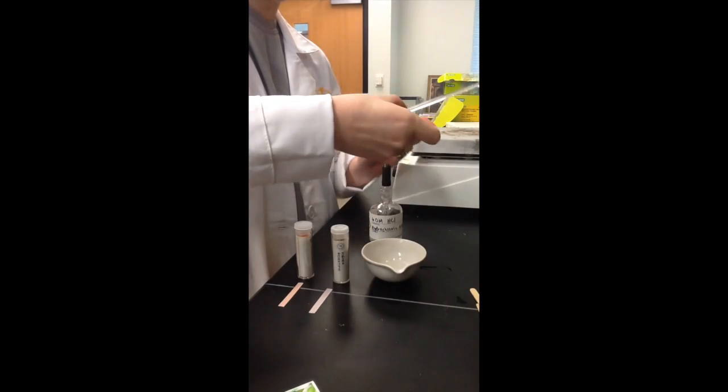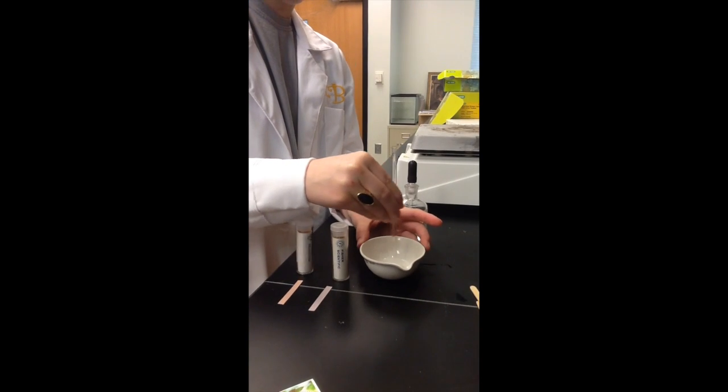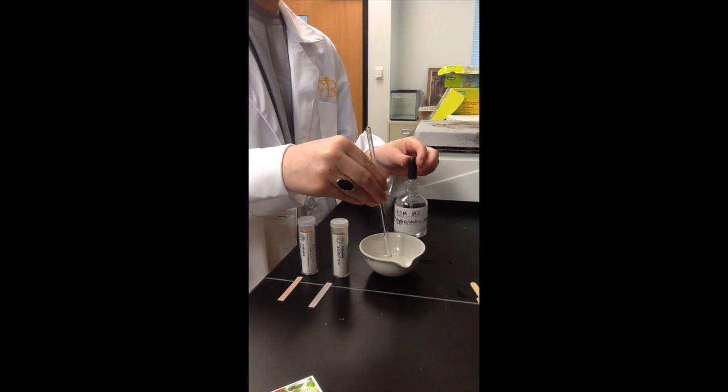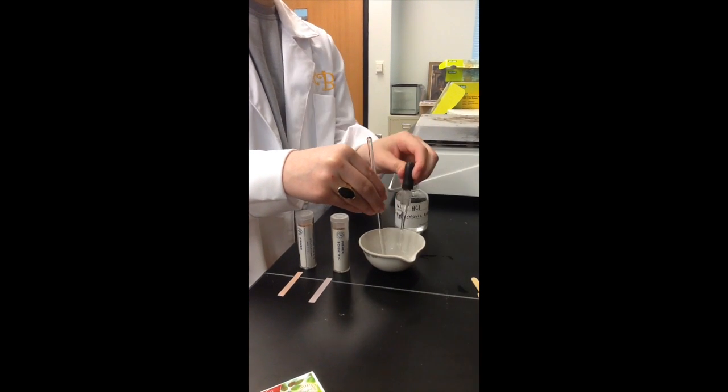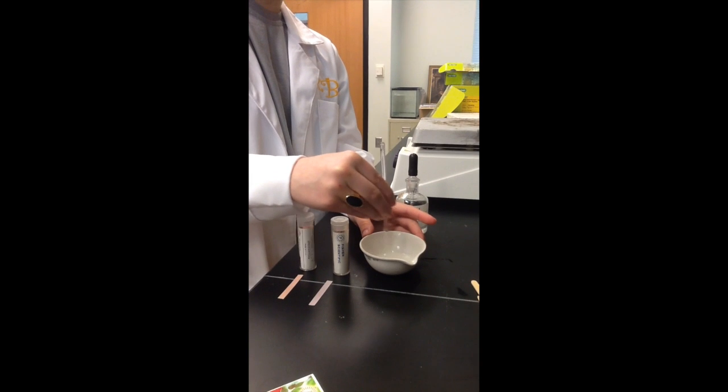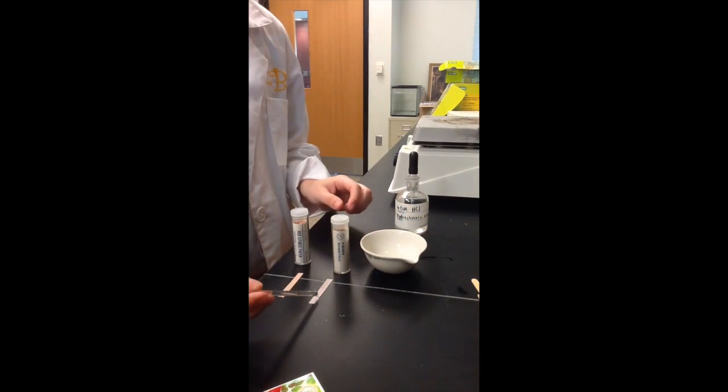Continue adding 6 molar HCl until the solution becomes acidic. Test the pH of your solution using litmus paper. After doing this, the blue litmus paper turned red, meaning that our solution is now acidic.